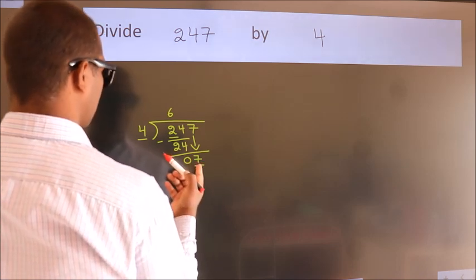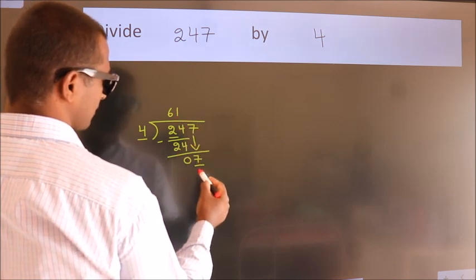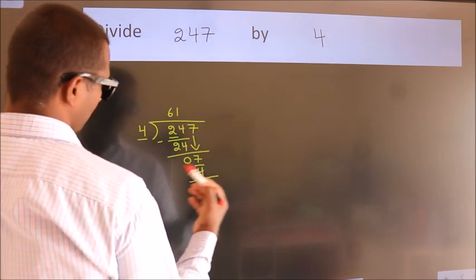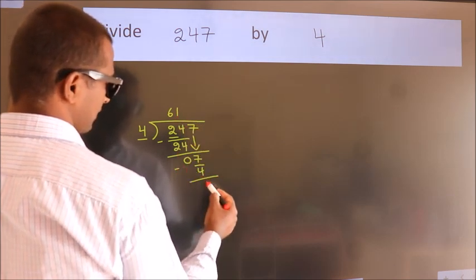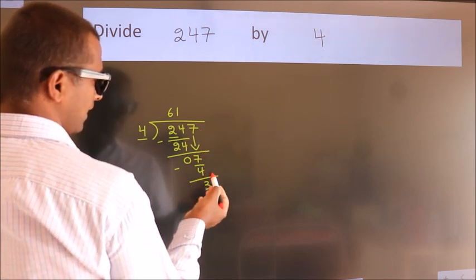A number close to 7 in the fourth table is 4 once, which is 4. Now we subtract. We get 3. After this, no more numbers to bring down.